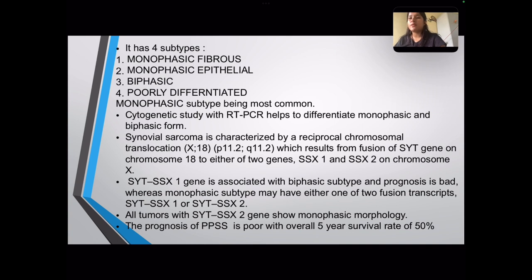Cytogenetic study with reverse transcriptase PCR helps to differentiate monophasic and biphasic forms. Synovial sarcoma is characterized by a reciprocal chromosomal translocation between chromosome X and chromosome 18 at p11.2 and q11.2 gene loci, resulting from fusion of the SYT gene on chromosome 18 to either SSX1 or SSX2 on chromosome X. SYT-SSX1 gene fusion is associated with the biphasic subtype and a worse prognosis, whereas all tumors with SYT-SSX2 show monophasic morphology.